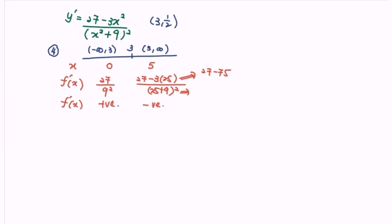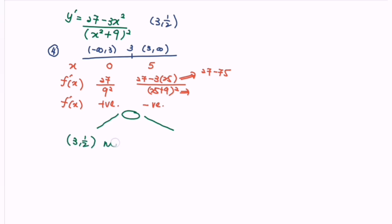Interpreting the results: on the left side of x = 3, the derivative is positive, meaning the function is increasing. On the right side, it is negative, meaning the function is decreasing. Therefore, the nature of the point (3, 1/2) is a maximum point.